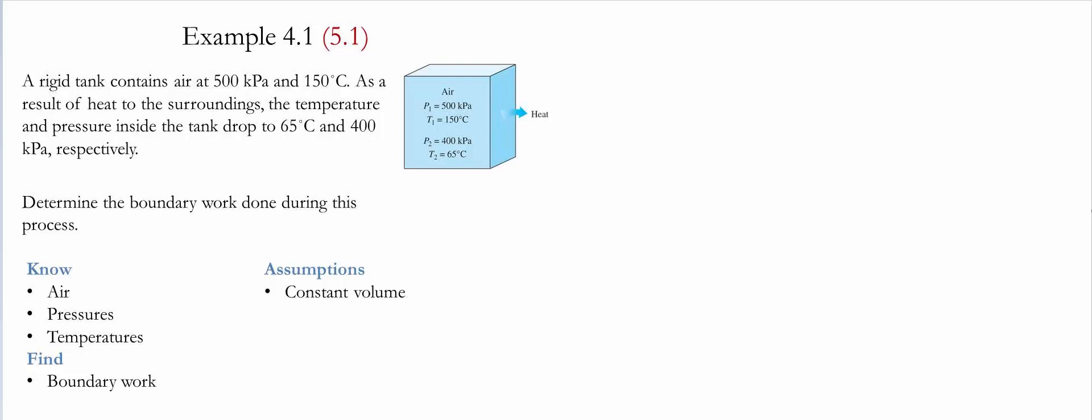A rigid tank contains air at 500 kilopascals and 150 celsius. As a result of heat to the surroundings, the temperature and the pressure inside of the tank drops to 65 celsius and 400 kilopascals respectively.